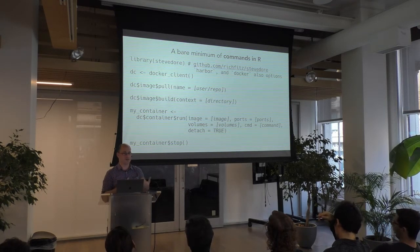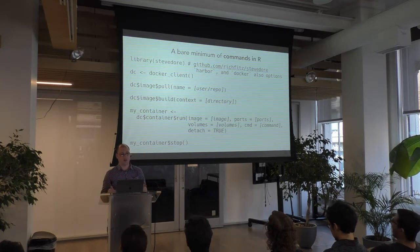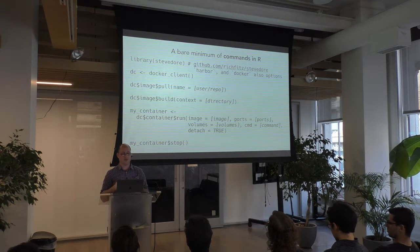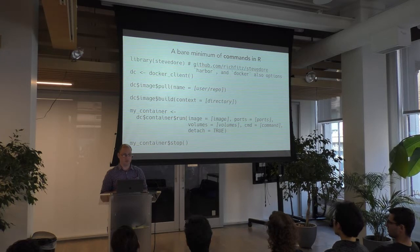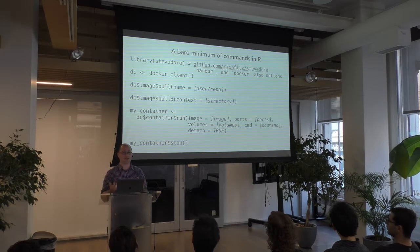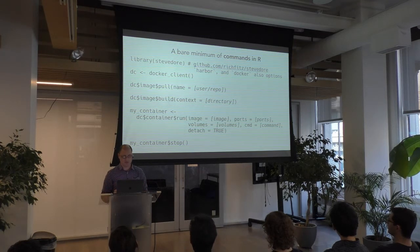To do all the things you'd do in the terminal, you can do it in R by loading the Stevedore library. You start what's called the Docker client so it's communicating with the Docker software. Then just like in the shell, you can pull an image with an R function, build an image with an R function, take an image and start a container with it specifying your ports and your command, and you can stop that container — all in your R console or R scripts.